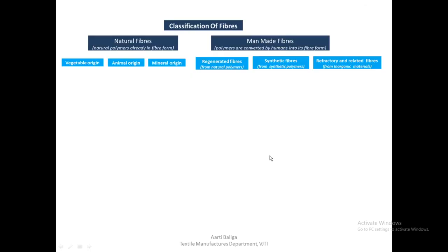Having understood spinning technology, let us now have a detailed look at the fibers available to us which could be made into yarns — the classification of fibers. The first classification would be natural fibers and manmade fibers. Natural fibers are natural polymers already in the fiber form, whereas manmade fibers are polymers that are converted by humans into the fiber form.